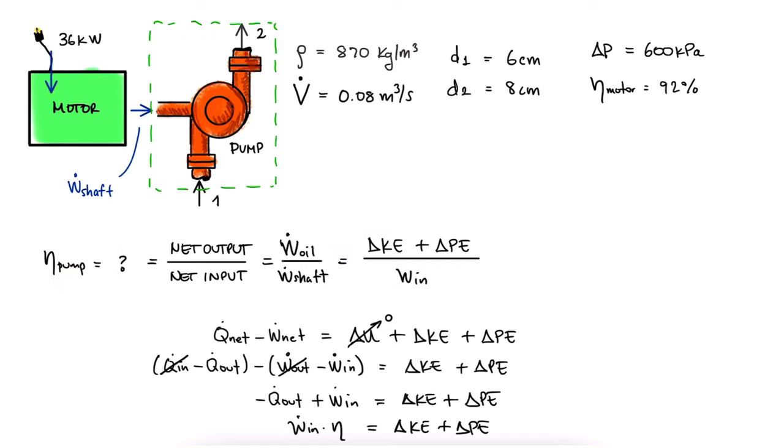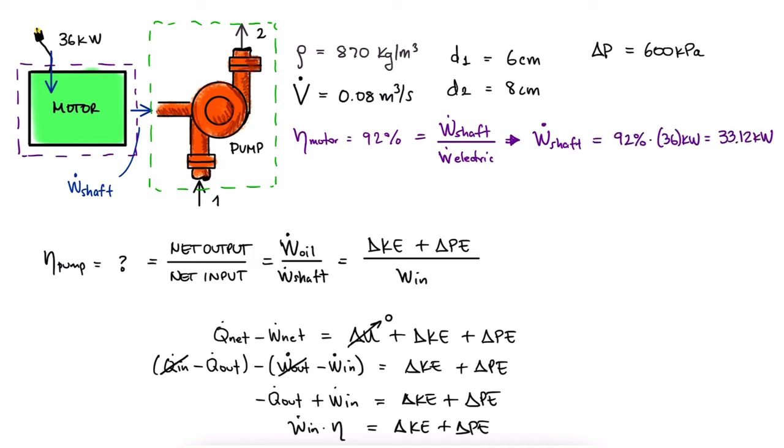Since the motor is drawing 36 kilowatts, but the motor is 92% efficient, it means that the work coming into the pump is 33.12 kilowatts.